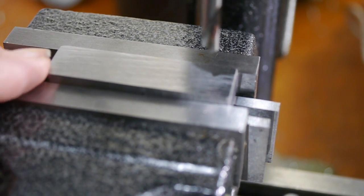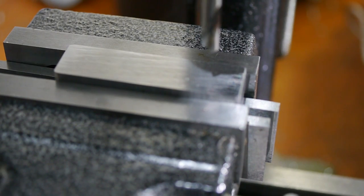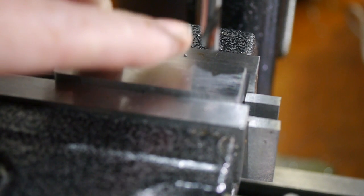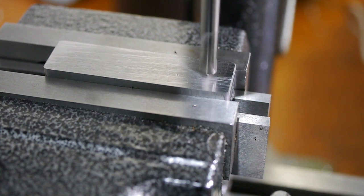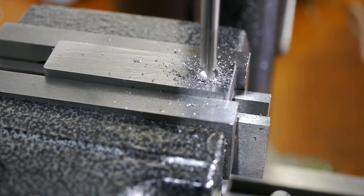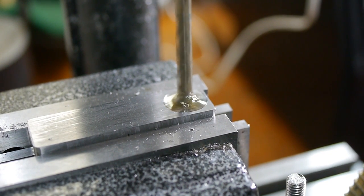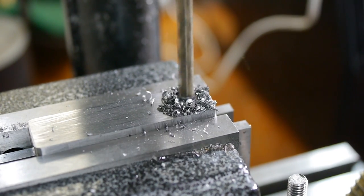The first is a threaded hole near one end. This will accept a screw, which will be used to define the stop depth. The thread is M6, so the tap drill needed to be 5mm.